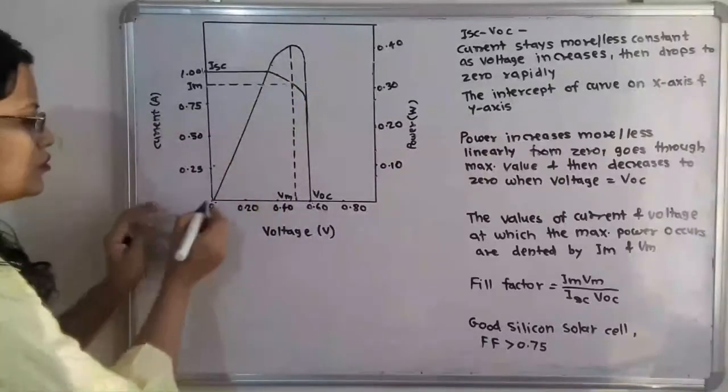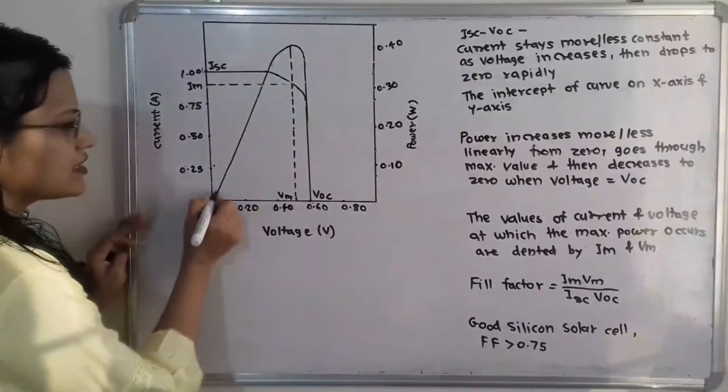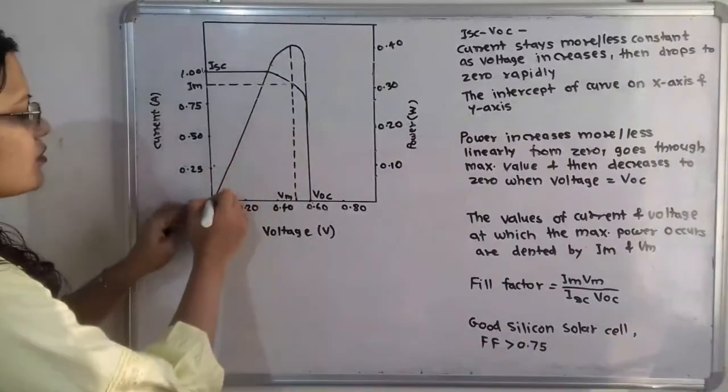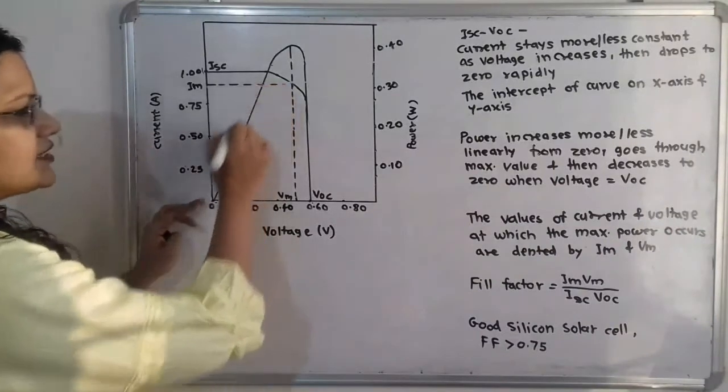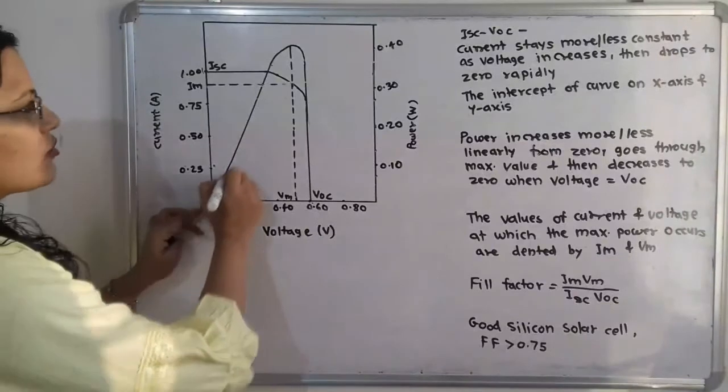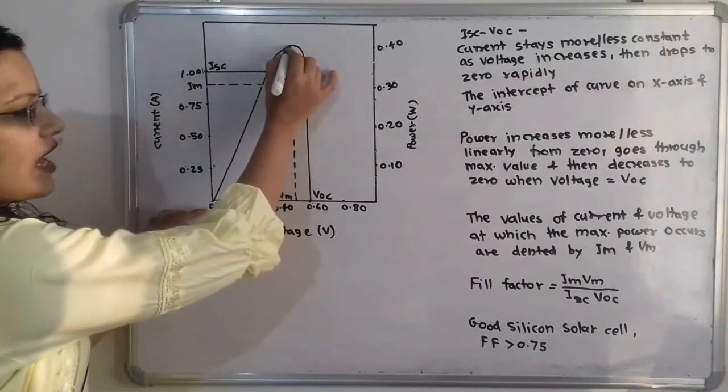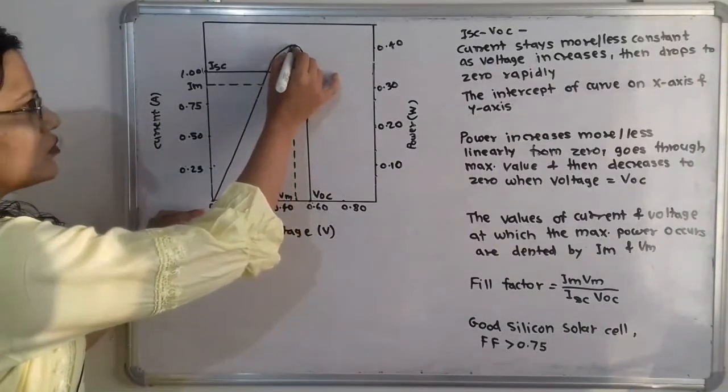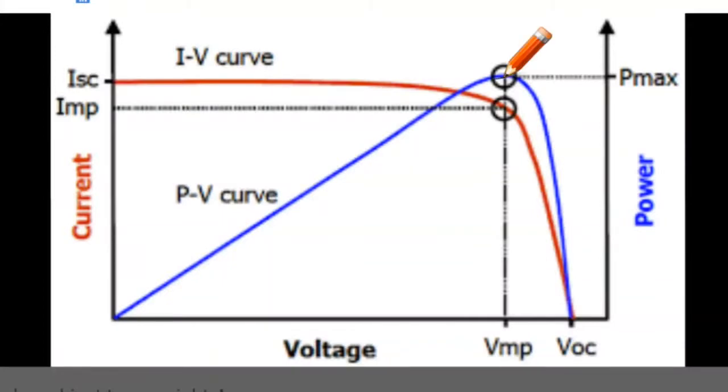From zero this power is getting started and it increases more or less linearly, and then moves through or goes through a maximum value and then decreases to zero. So here is the maximum value of power and then it decreases to zero. So when it decreases to zero at voltage V is equal to Voc.